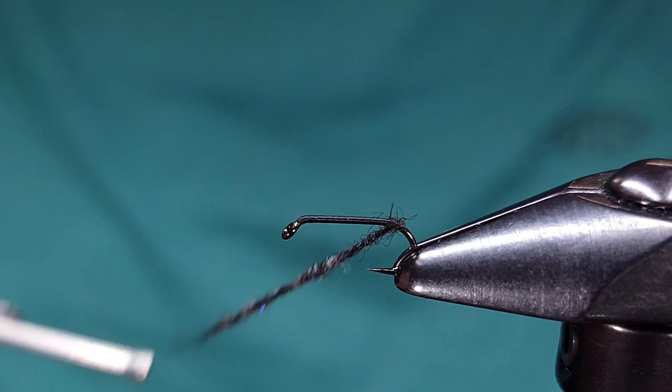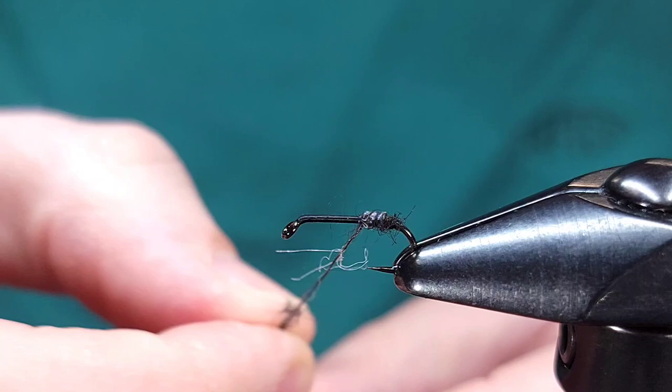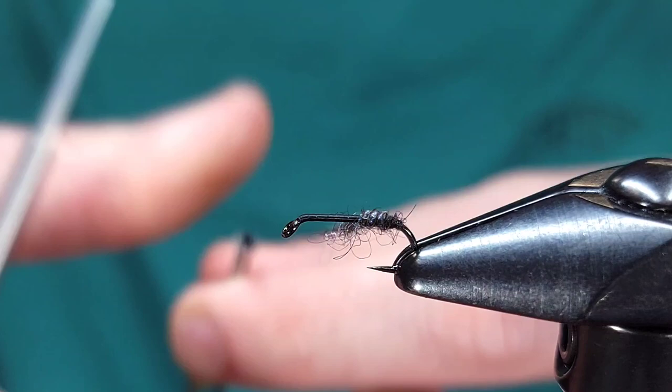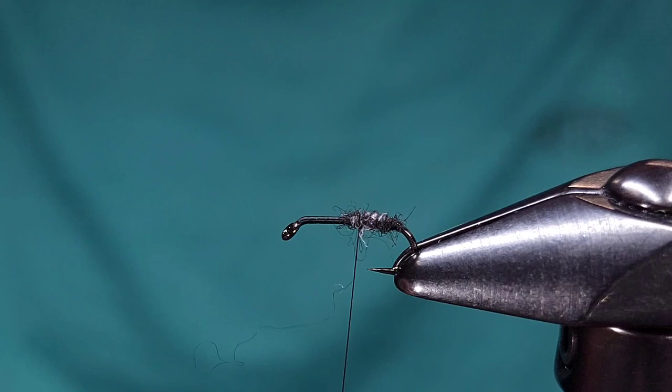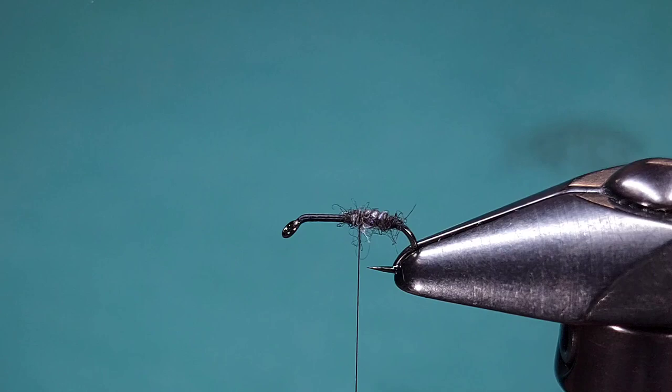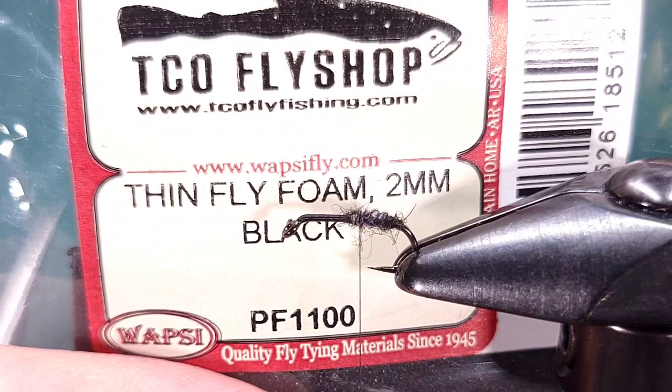So again I'm just going to take a couple wraps forward and I actually added a little bit too much here as you can see so I'm going to pull some off and again just make that dubbing noodle as small and thin as possible. I'm going to wrap a couple forward then where I want the thread to end and then I'm going to bring my thread back over just in front of the hook point as you can see here. What this does is it gives the foam a little bit more something to grab onto.